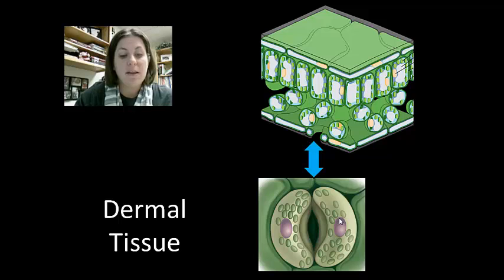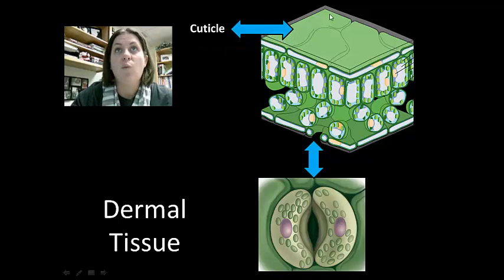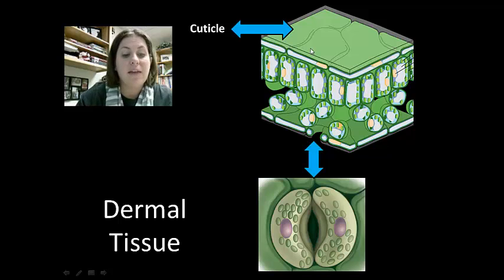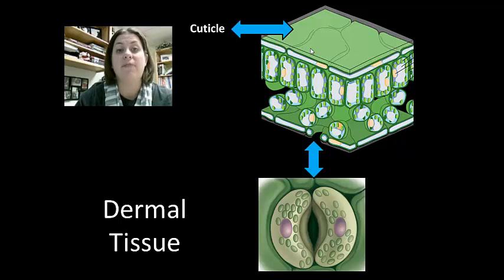Stems and leaves also have another adaptation to help prevent water loss — the cuticle. This is a thin, clear, waxy covering on top of the epidermis, produced by the epidermis of the stems and leaves. Since the cuticle is made of wax, a fat, it creates a barrier that holds water inside.